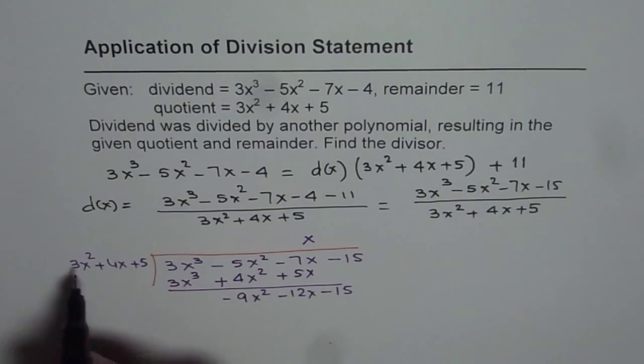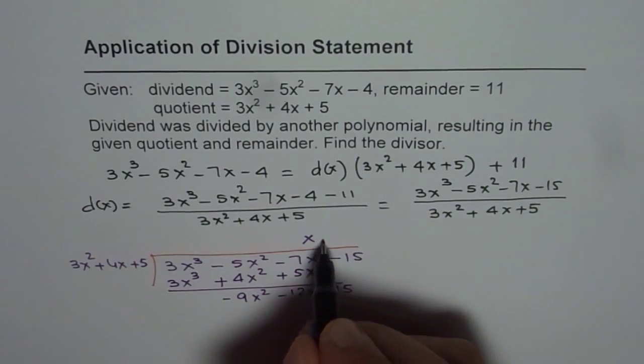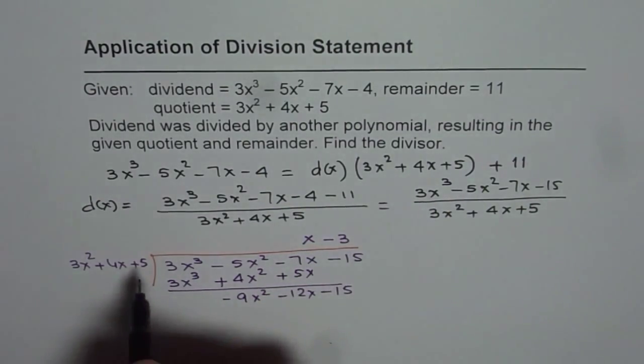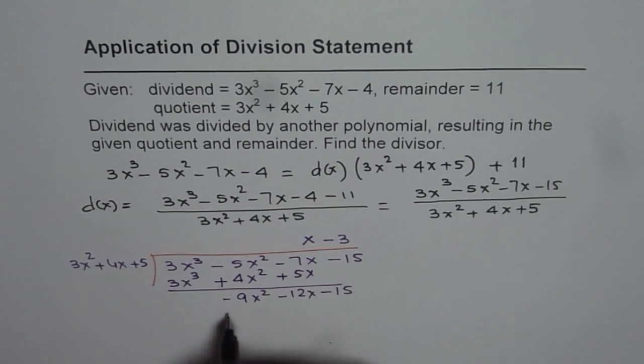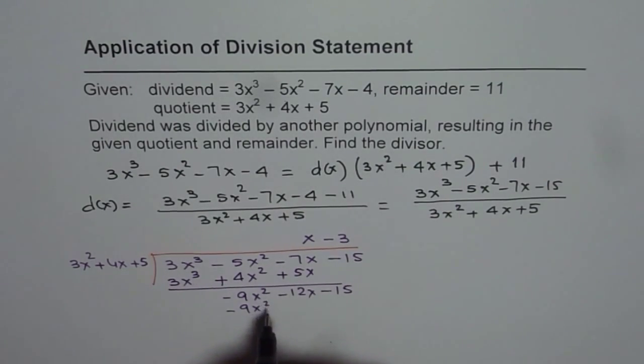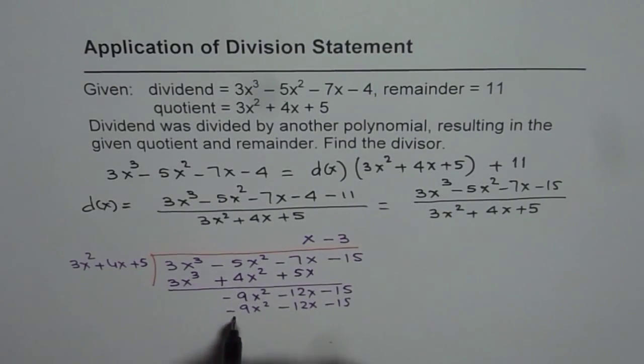So that should go by 3x. So you do minus 3. When you do minus 3, you get minus 9x square minus 12x minus 15. The remainder becomes 0.